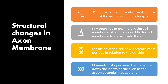There are structural changes that occur during an action potential. Tiny openings or channels in the cell membrane allow ions outside the cell to move inside. The inside of the cell becomes positive relative to the outside, and channels first open near the soma, then down the length of the axon as the action potential moves along.